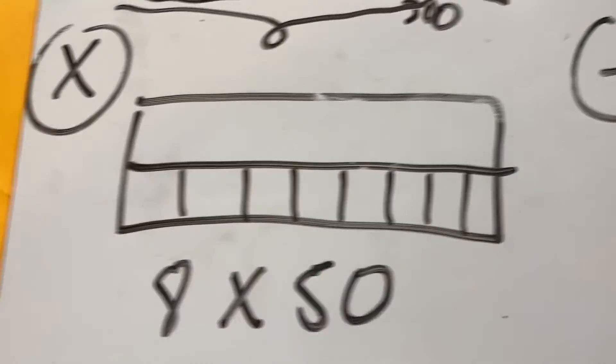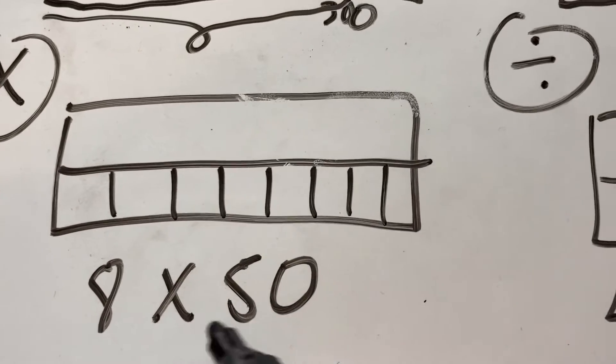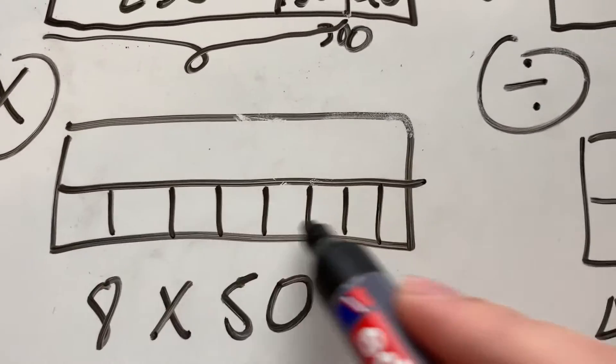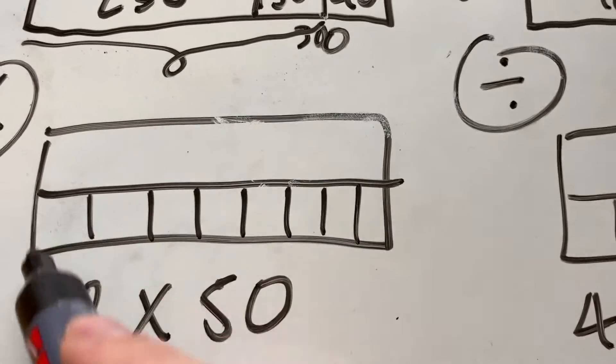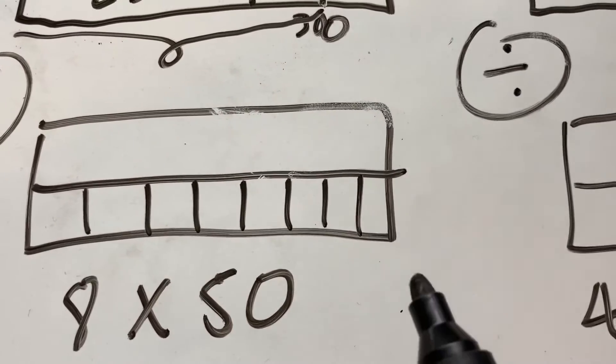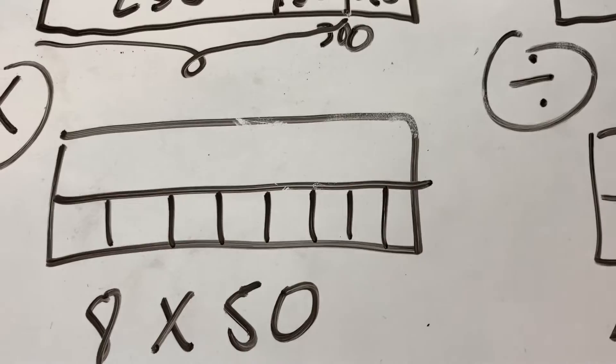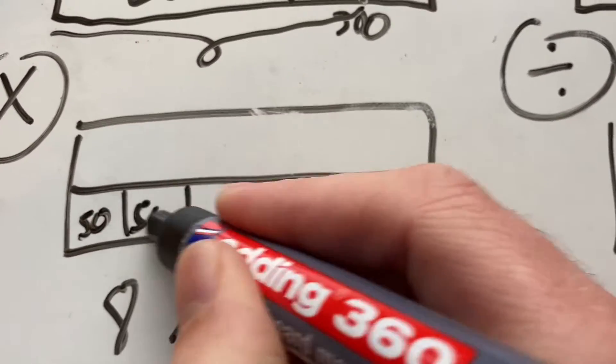Now let's have a look at how bar models work for multiplication. I've got 80 times 50. And I've drawn here 1, 2, 3, 4, 5, 6, 7, 8 little blocks. You might want to use grid paper or actual blocks to make it exactly equal. But say my drawing was neater. Each of those is going to be 50.